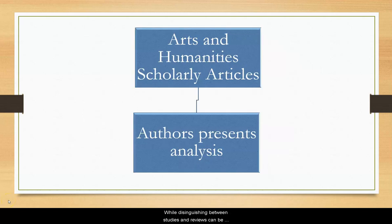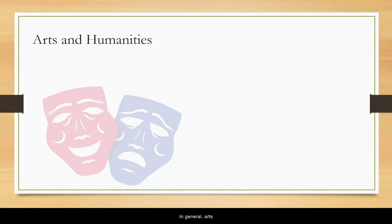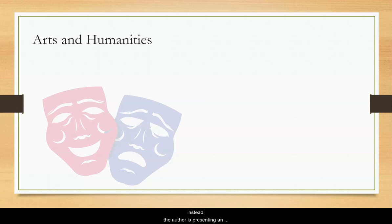While distinguishing between studies and reviews can be generalized in the sciences and social sciences, articles in the arts and humanities usually look a little different. In general, arts and humanities articles are not conducting an experiment or collecting data from a number of other sources. Instead, the author is presenting an analysis of a topic, such as a literary work, a piece of art, or another scholar's ideas.